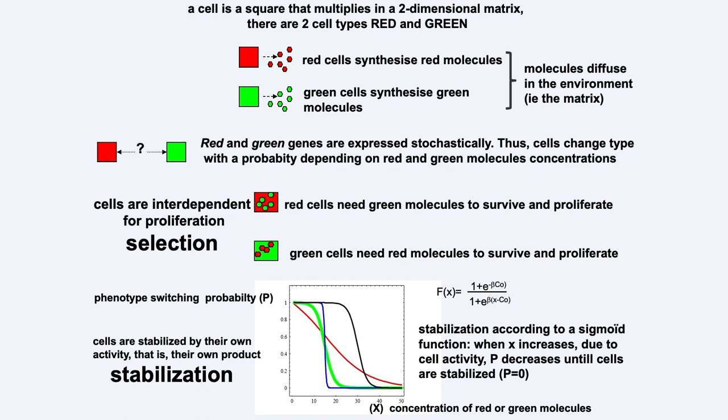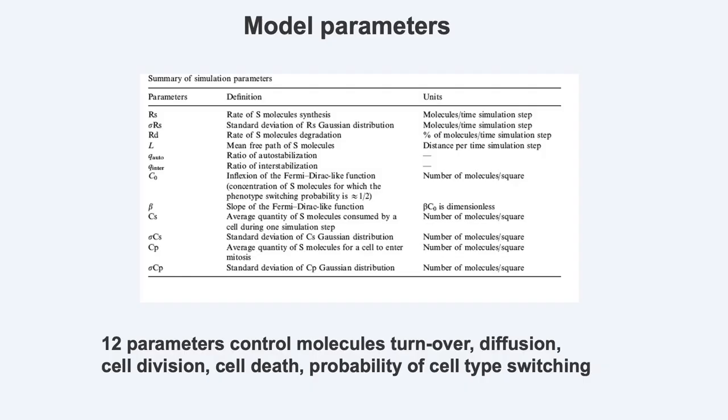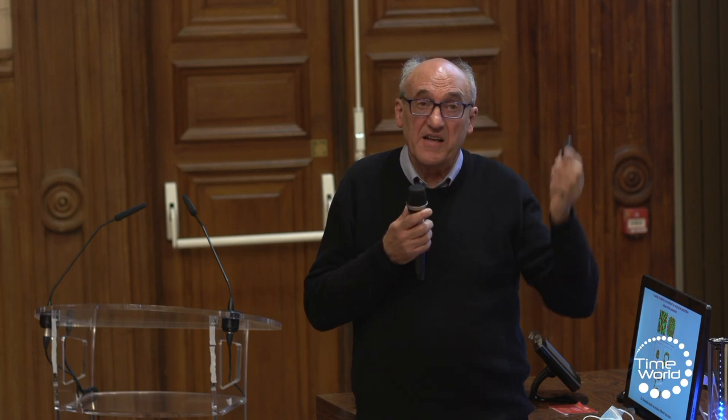Second, stabilization — this is the stabilization part of the model. Cells are stabilized by their own activity, that is, by their own product. This stabilization occurs according to a sigmoid function, starting with a switching probability — green to red or red to green — equal to one when the concentration of molecules is null. This probability decreases as the concentration of molecules increases due to the activity of cells, until the probability is null and the cells are stabilized. Red cells are stabilized by their own product, red molecules; similarly, green cells are stabilized by green molecules. There are 12 parameters in the model that control molecule turnover, diffusion, cell division, cell death, and probability of cell type switching.